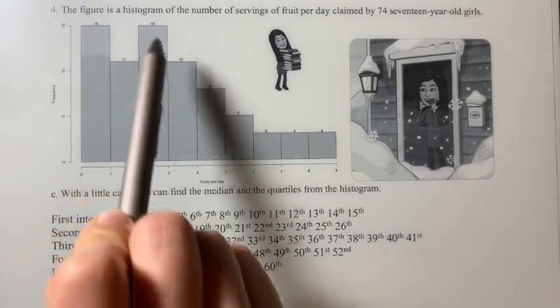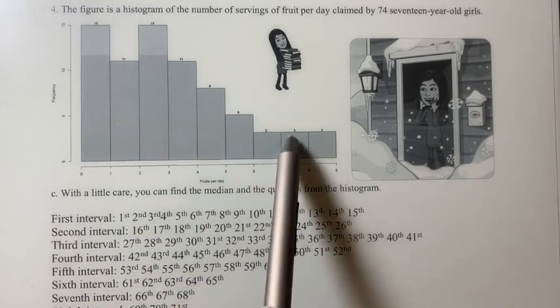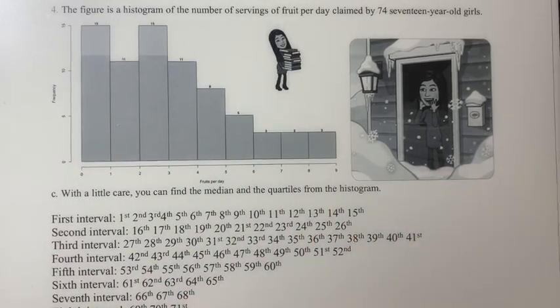Okay, so we have 15, 11, 15, 11, 8, 5, 3, 3, 3. If you add them all, you should have 74.